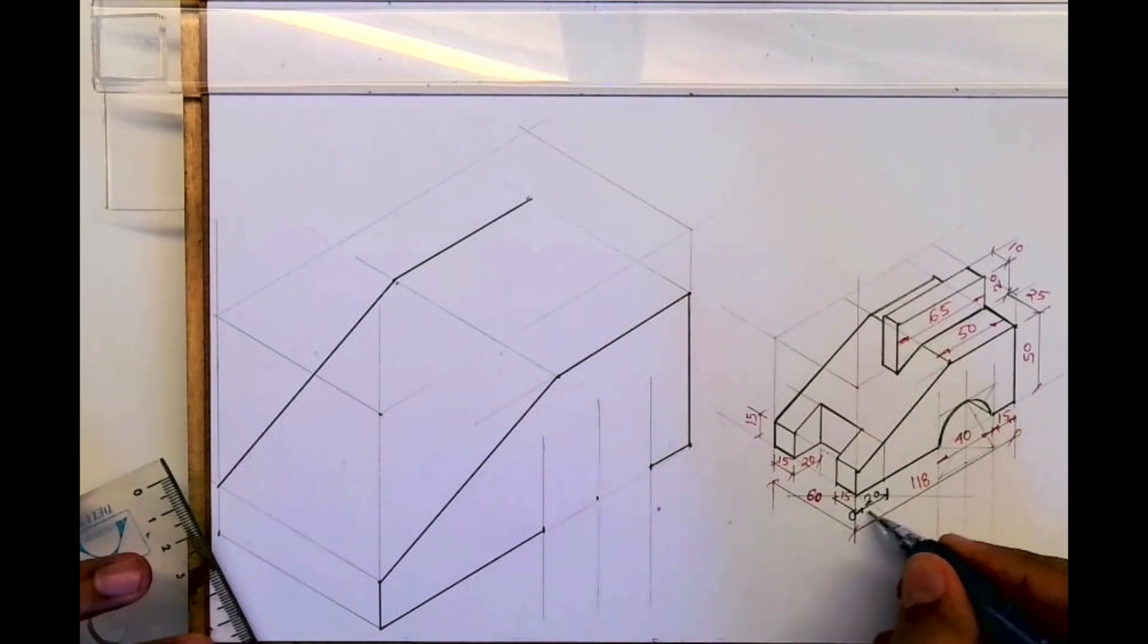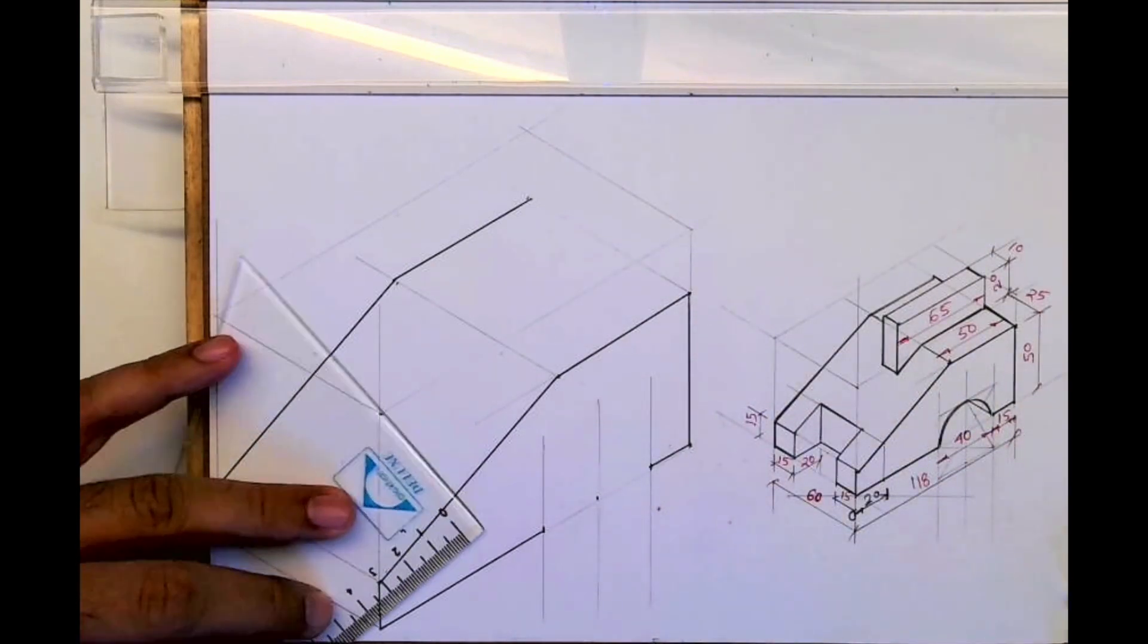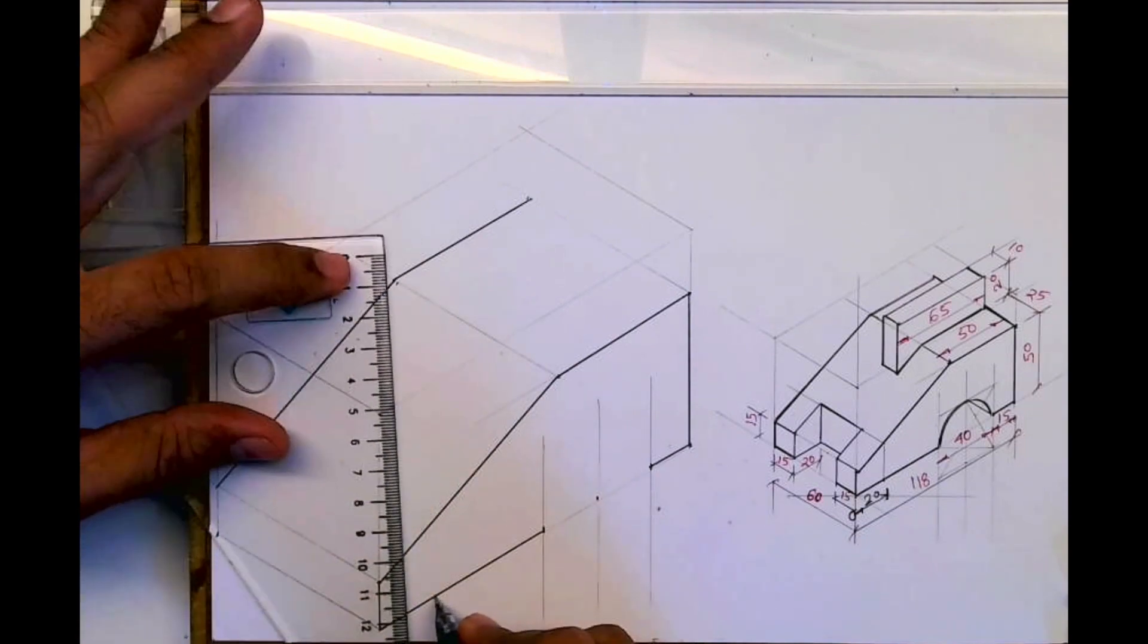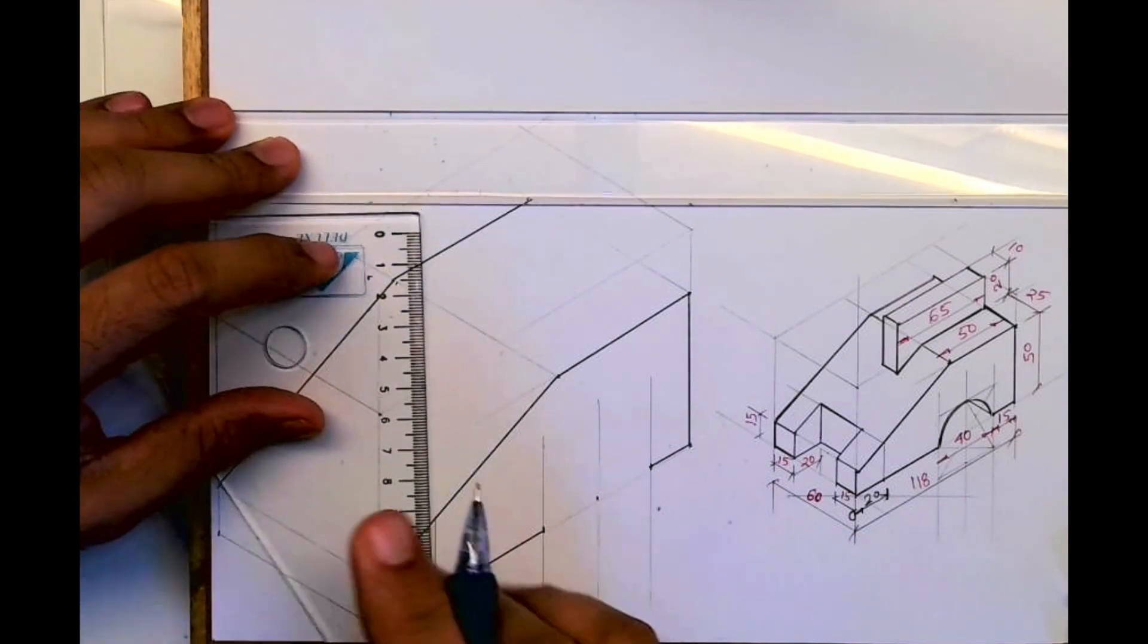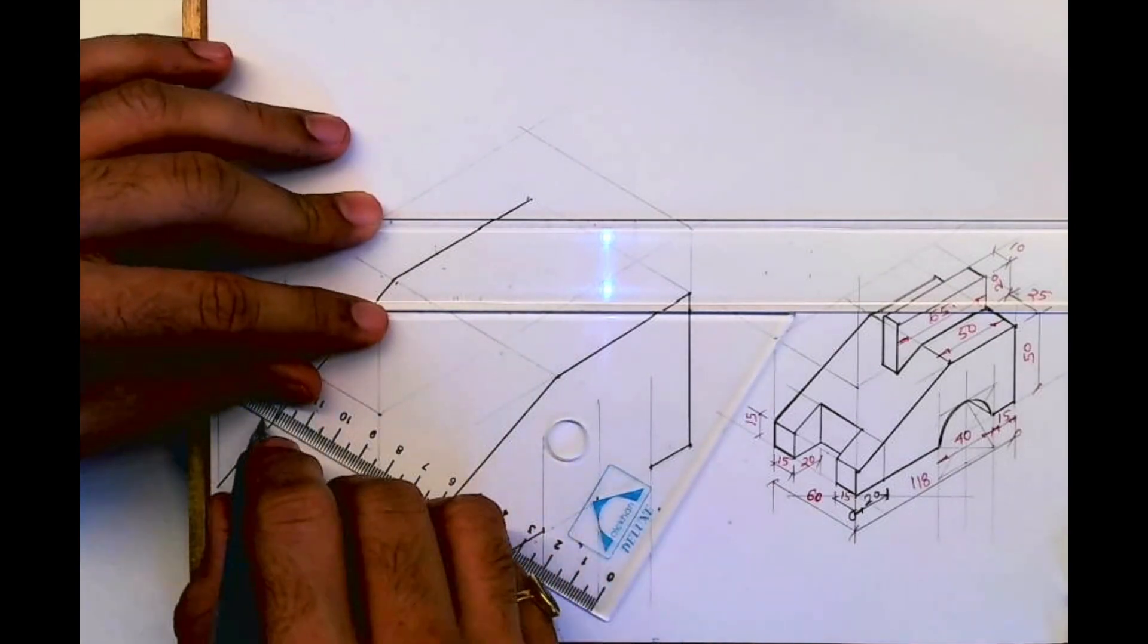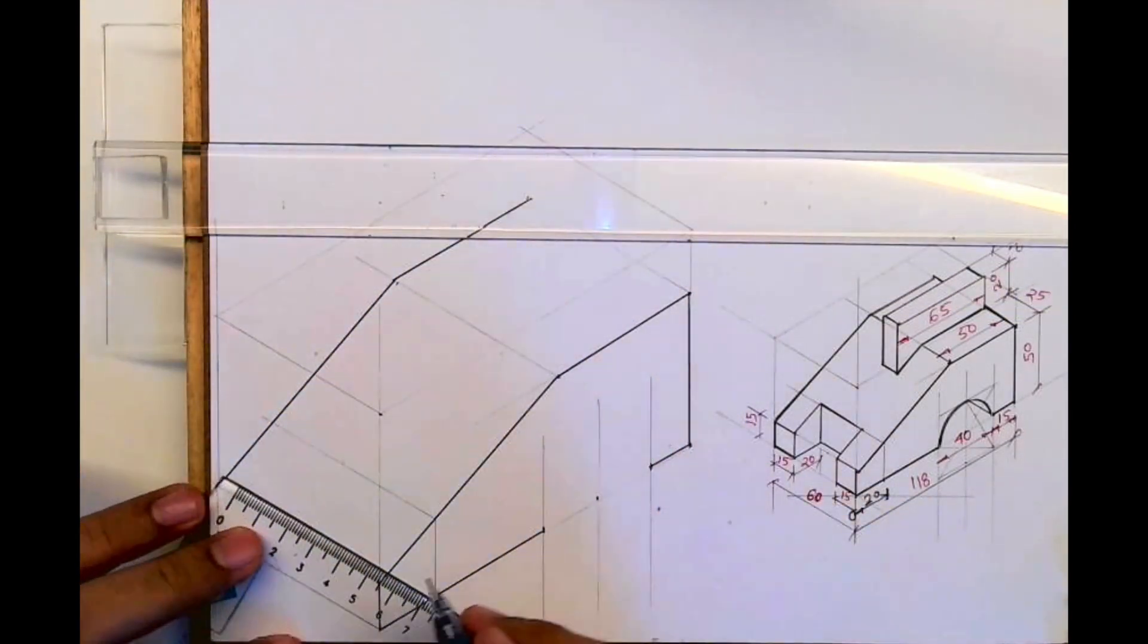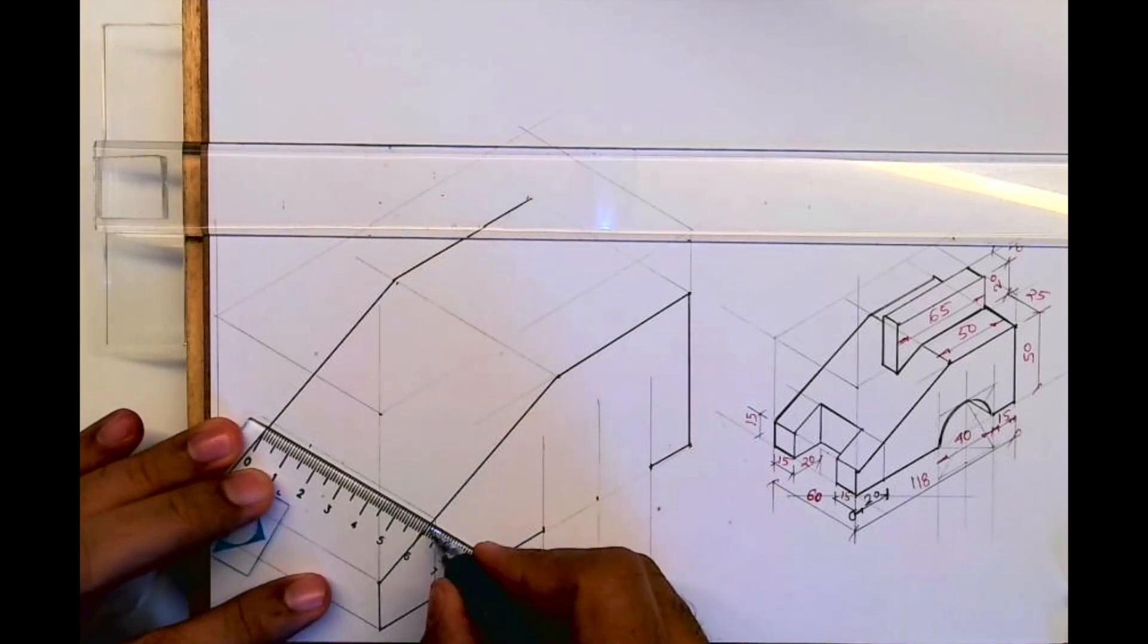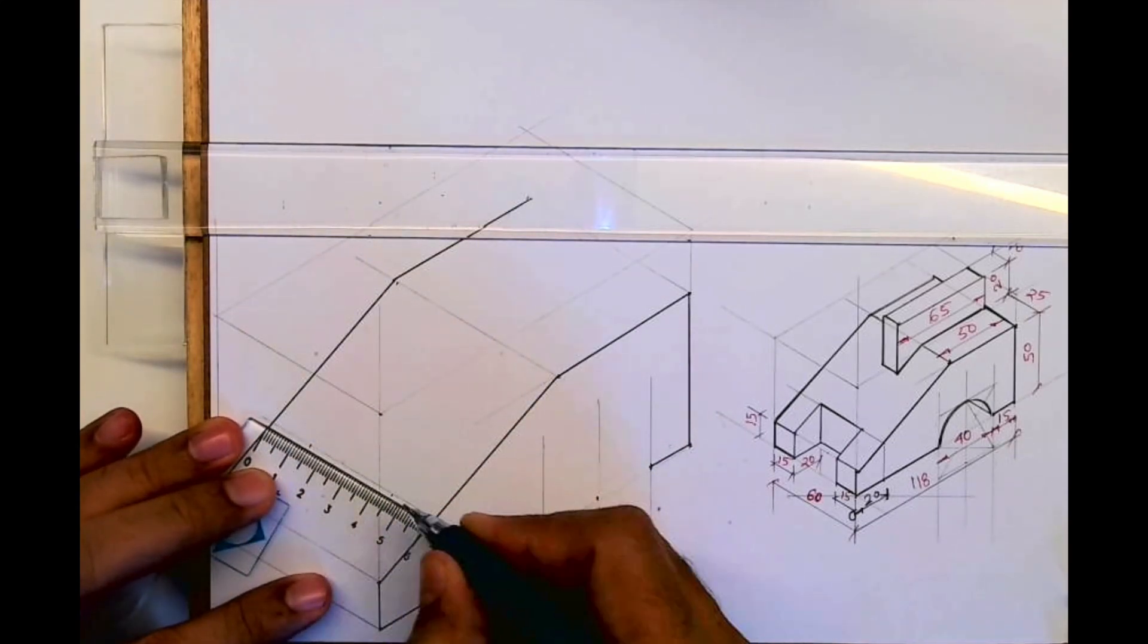And then we will draw this. So I will take 20 from here. We'll draw a line from here, then we'll mark 15. Then again 15 from here. 15, 15 on both the sides.